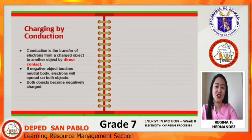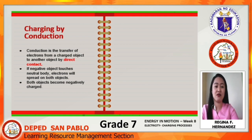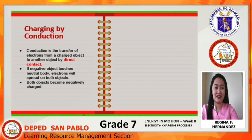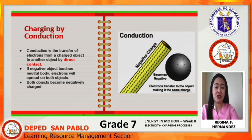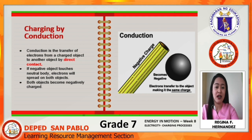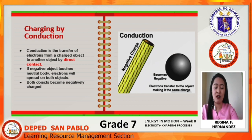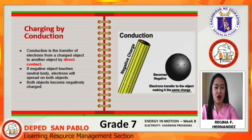So what is charging by conduction? Conduction is the transfer of electrons from a charged object to another object by direct contact. If a negatively charged object touches a neutral body, electrons will spread to both objects, and both objects become negatively charged.